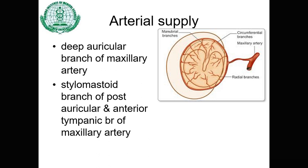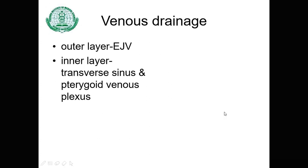The arterial supply of the tympanic membrane: the outer cuticular layer is supplied by the deep auricular branch of the maxillary artery, which ramifies beneath the cuticular layer. The mucous layer is supplied by the stylomastoid branch of the posterior auricular artery and the anterior tympanic branch of the maxillary artery. For venous drainage, the outer layer drains into the external jugular vein, while the inner layer drains into the transverse sinus and the pterygoid venous plexus.